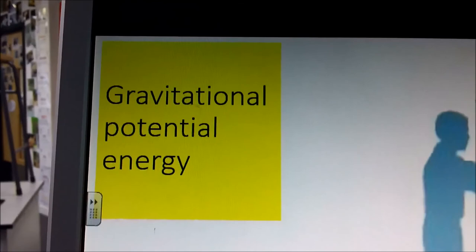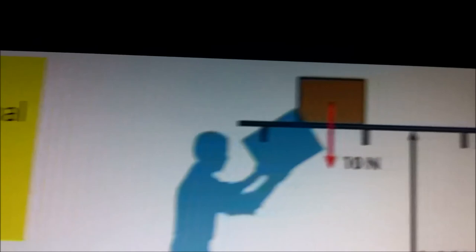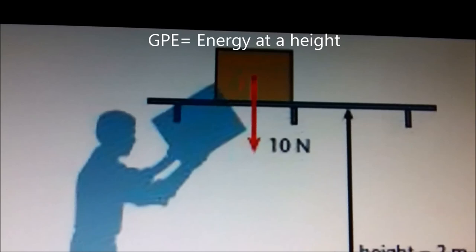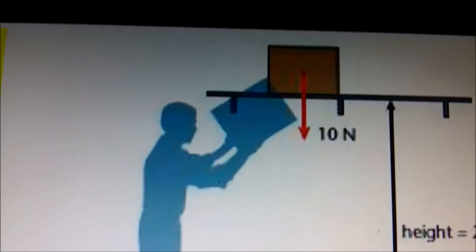Gravitational potential energy is the energy when something is at a height. Like this box for instance. This box is on a shelf and has 10 newtons of GPE, gravitational potential energy.